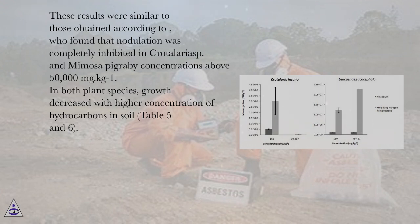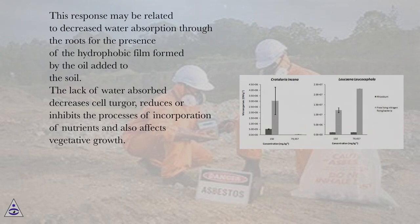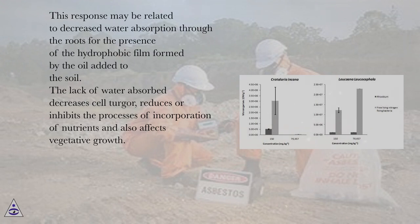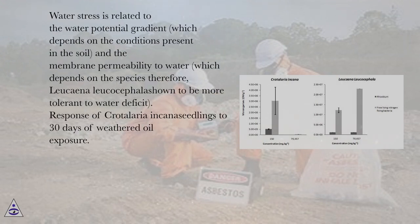In both plant species, growth decreased with higher concentration of hydrocarbons in soil (Tables 5 and 6). This response may be related to decreased water absorption through the roots due to the presence of the hydrophobic film formed by the oil added to the soil. The lack of water absorbed decreases cell turgor, reduces or inhibits the processes of incorporation of nutrients and also affects vegetative growth. Water stress is related to the water potential gradient, which depends on the conditions present in the soil and the membrane permeability to water, which depends on the species. Therefore, Leucaena leucocephala was shown to be more tolerant to water deficit.